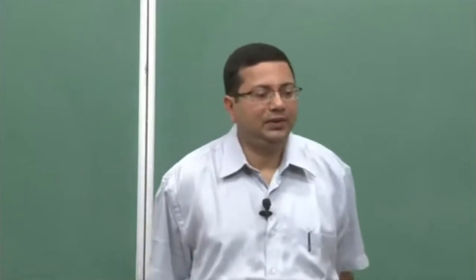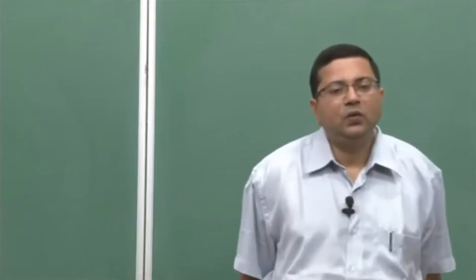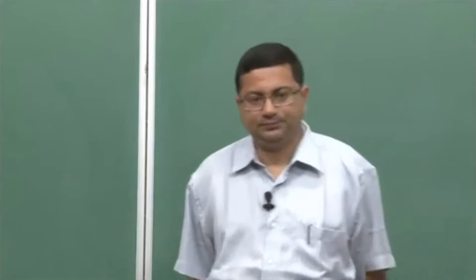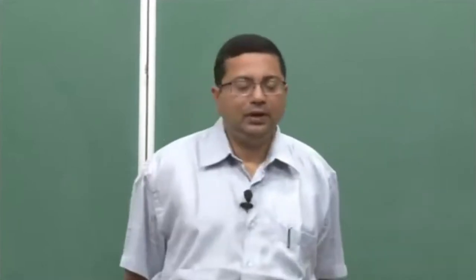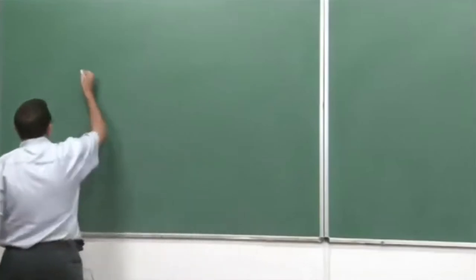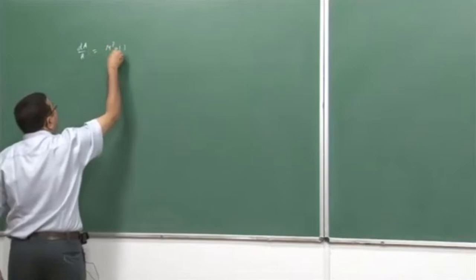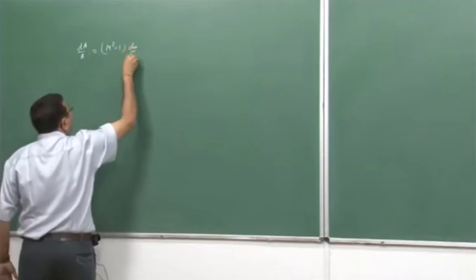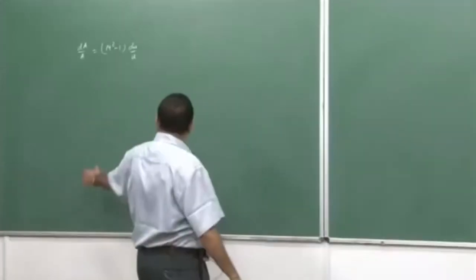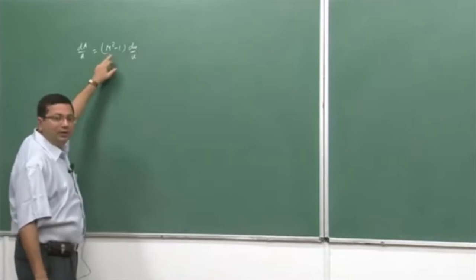Welcome back. In the last few lectures, we have been discussing the quasi-1D flow through variable area ducts. We have derived the area-velocity relationship in the last class, which is dA/A = (M² - 1) du/u. After that, we have shown that there are four possibilities of Mach number variation.